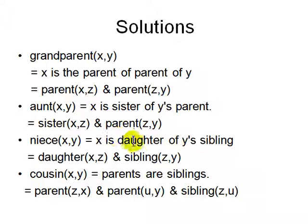Niece is defined as x is a niece of y if x is a daughter of y's sibling. So you can write daughter, and there is a z who is a parent of x, and z is a sibling of y. Let's look at niece properly: x is a niece of y if x is a daughter of y's sibling. So there is a z who's a parent of x, and z is a sibling of y.